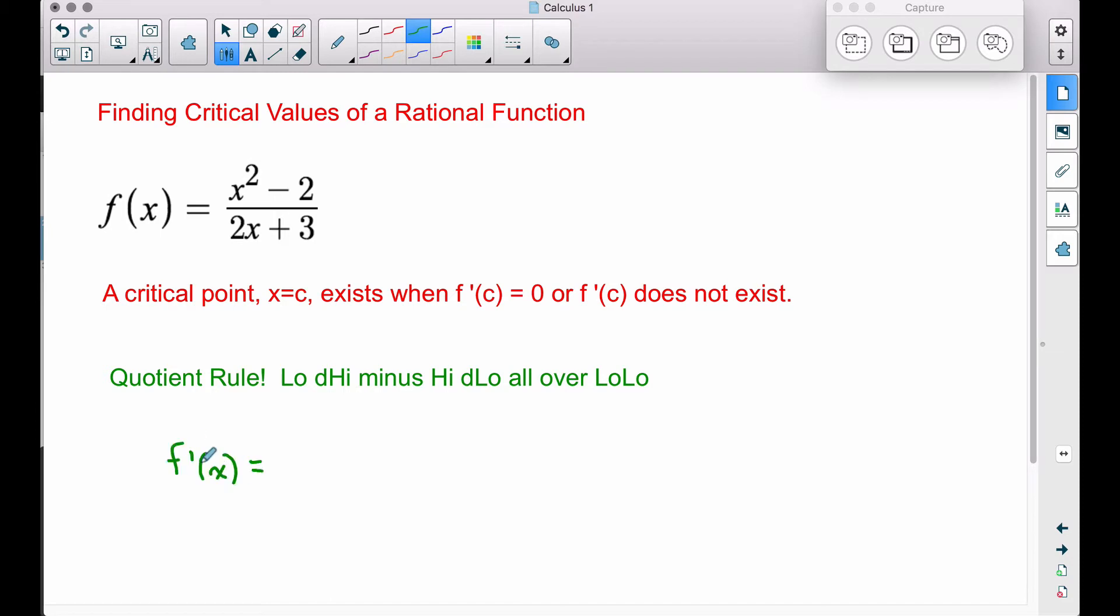What does that mean? f prime of x: let's do low, that means we take this lower function, this bottom piece, and we leave it alone, so we have 2x plus 3. d high means we take the derivative of the upper function, the high function, so take the derivative of the top here, that's 2x.